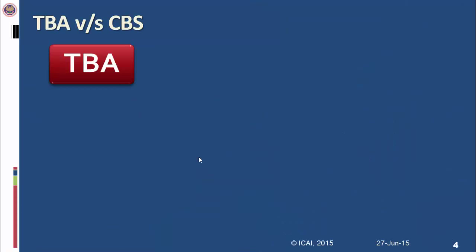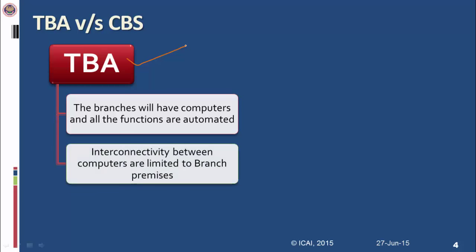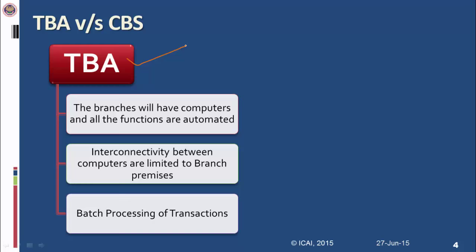TBA — Total Branch Automation — vis-à-vis Core Banking System (CBS). In TBA, computerization was limited to branches and not connected to regional, zonal, or head offices. Branches had computers and all functions were automated, however interconnectivity between computers was limited to branch levels. So a customer of, say, XYZ Bank could not go to another branch and carry out transactions as smoothly as at their home branch. Secondly, batch processing of transactions was the mode of processing.